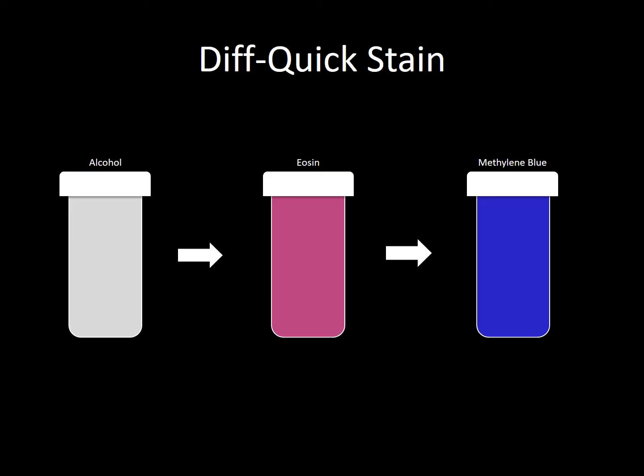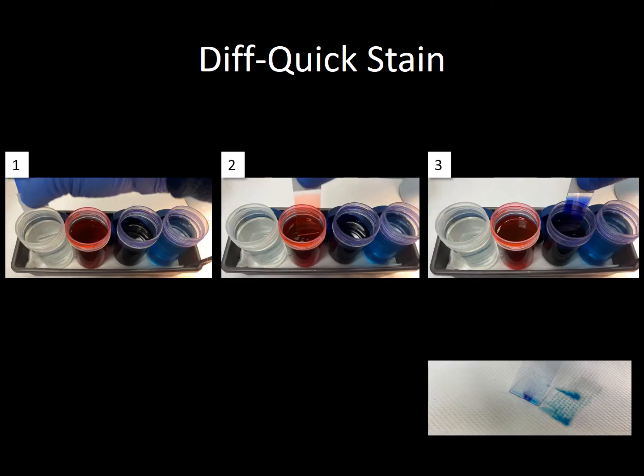The Diff-Quik staining method is one of the most commonly used worldwide. It is a quick method with a very short staining time and uses three different solutions: alcohol, eosin, and methylene blue. The slide must be fully air dried before going briefly into the first solution, which is methanol. The slide is then removed, held vertically, and gently tapped on a dry paper towel to remove the extra liquid, then moved into eosin for a few seconds. The excess liquid is again removed, and the slide is dipped into methylene blue for an additional few seconds.